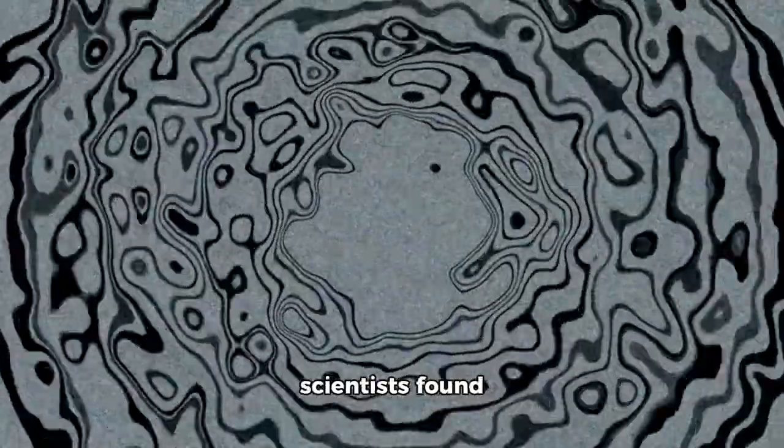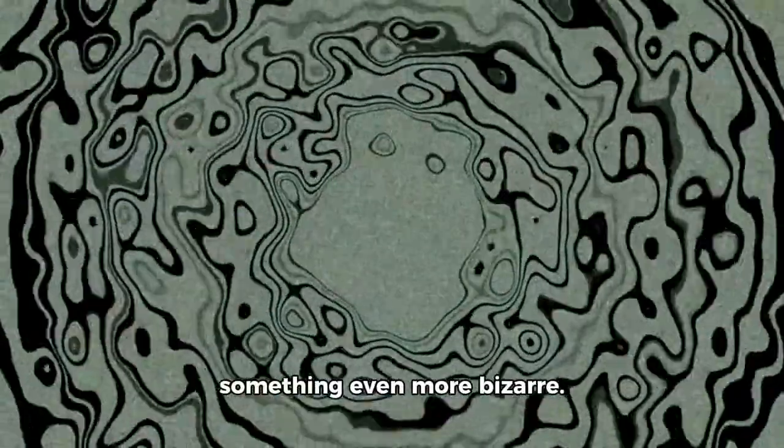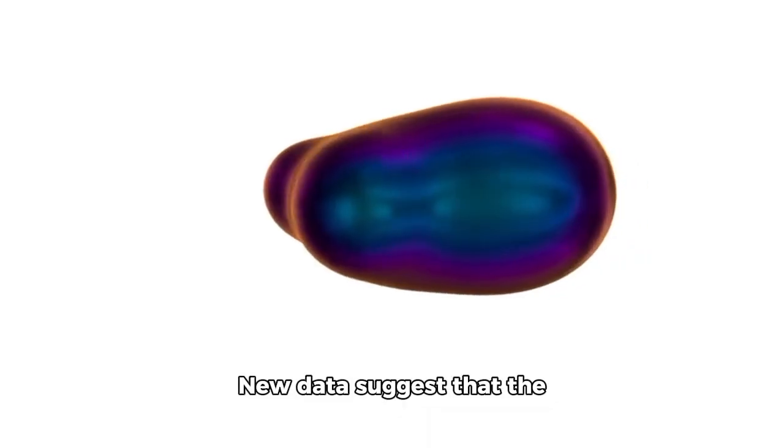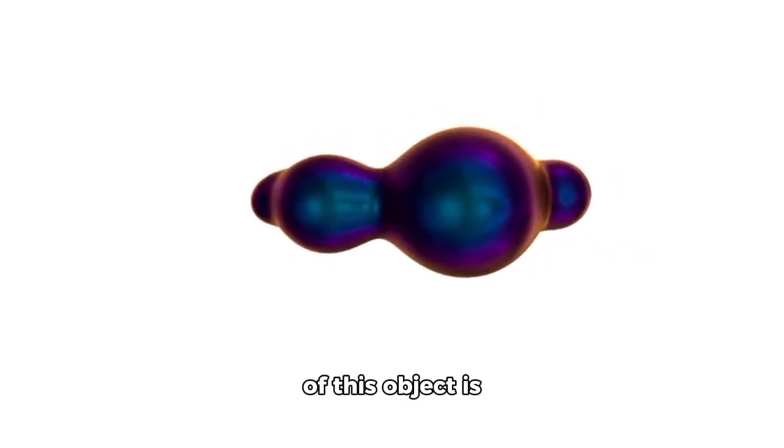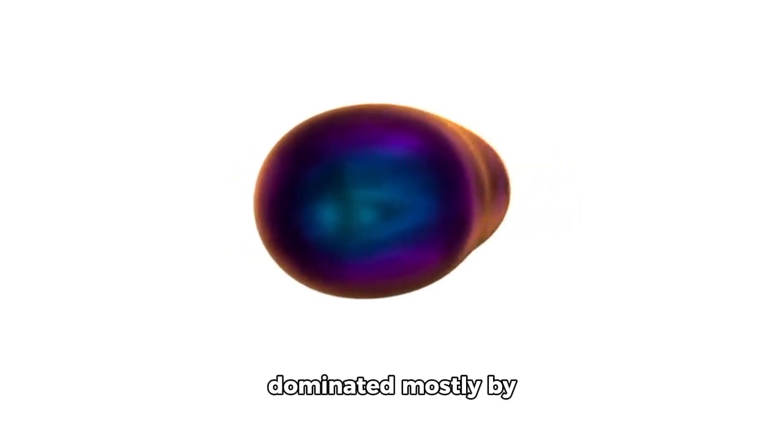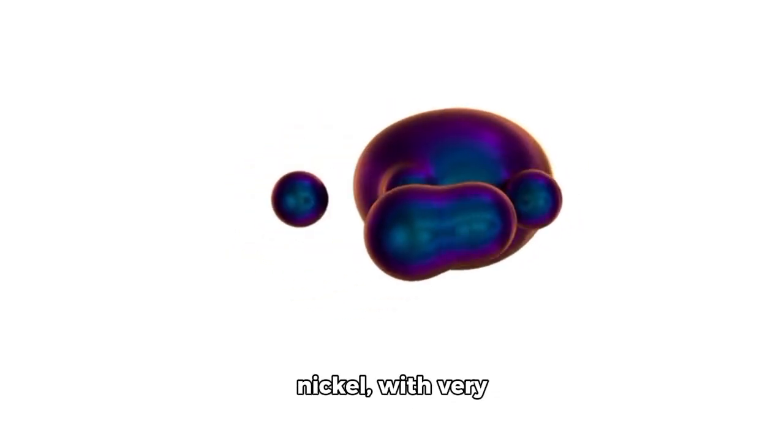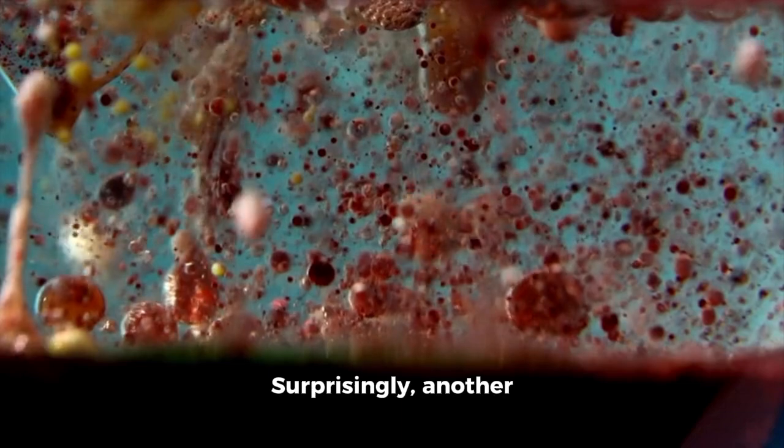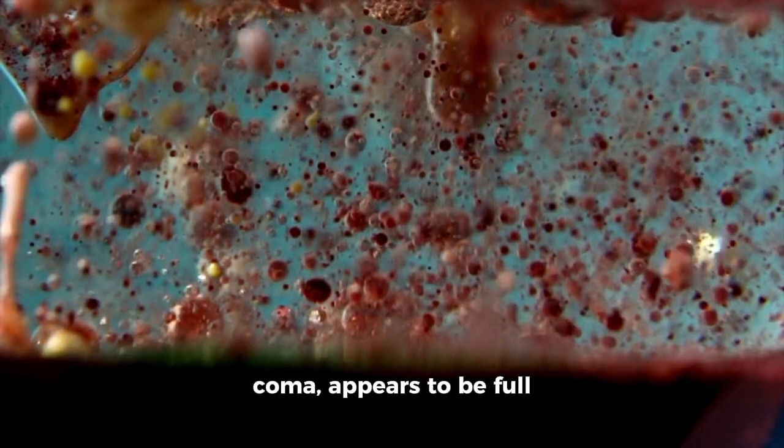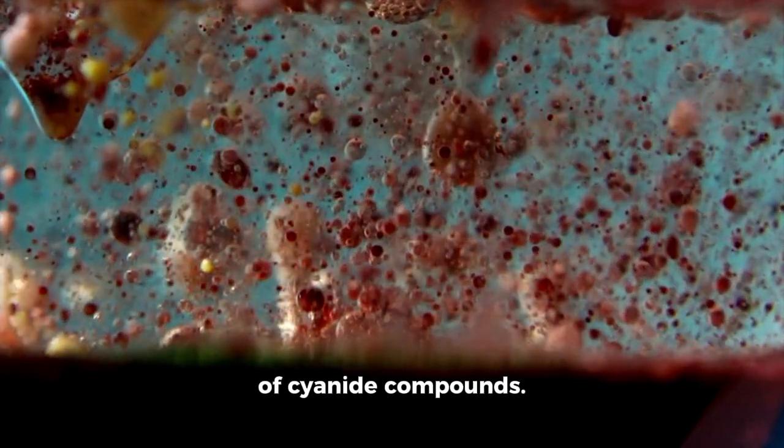In a new observation, scientists found something even more bizarre. New data suggest that the inner part of the nucleus of this object is dominated mostly by nickel with very little or hardly any iron. Surprisingly, another layer, mixed with the coma, appears to be full of cyanide compounds.